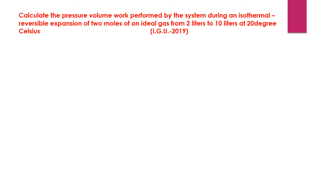The question is: calculate the pressure-volume work performed by the system during an isothermal reversible expansion. The system undergoes isothermal reversible expansion — two moles of an ideal gas from two liters to ten liters at twenty degrees Celsius. We need to find out the pressure-volume work.